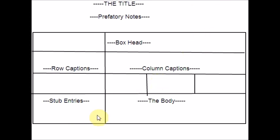Footnotes appear at the foot of the body, giving further explanation. Source notes indicate where the source is taken from and come under the table. They indicate the source from which the information has been taken. Source notes also include information about the compiling agency, publication, and so on.